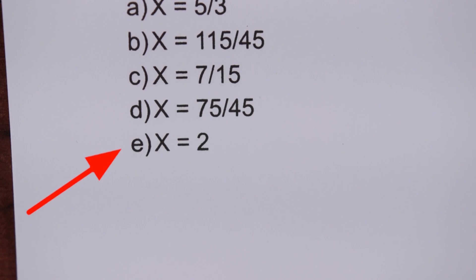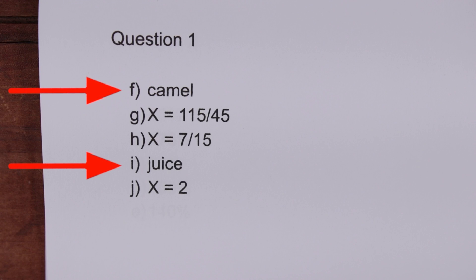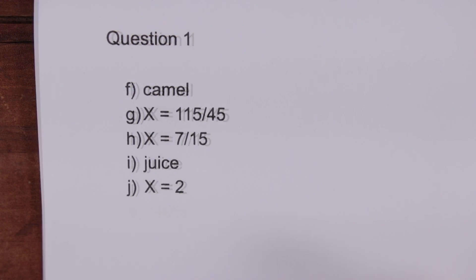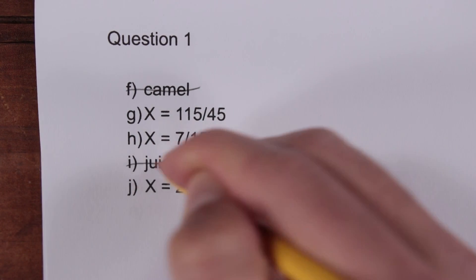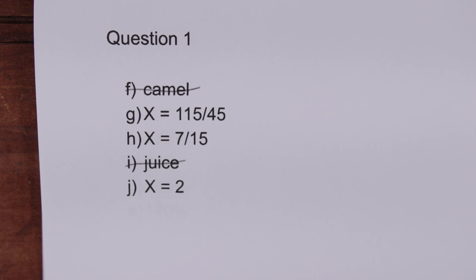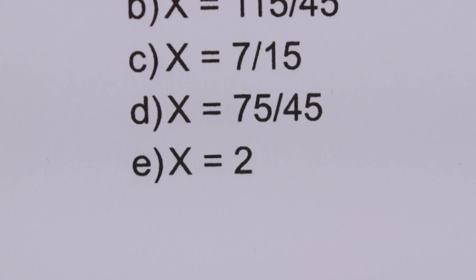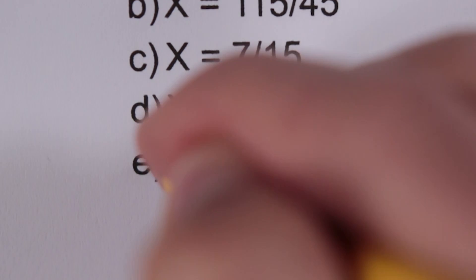E is the odd one out, being the only non-fraction, so let's start there. The test maker wants those who understand the problem to get it right and those who don't to get it wrong, so wrong answers can't be too obviously wrong — because then it would be too easy. For example, if 'camel' or 'juice' were options alongside all the other answers, it'd be pretty obvious they were wrong. So if the right answer were a whole number like two, it doesn't make it very challenging if all the other options are fractions. So we can rule out E.